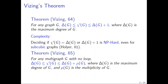Vizing also improved this result one year later: his theorem holds also for multigraphs. If you take a multigraph and color its edges with the constraint that adjacent edges get different colors, you just need to add mu of G — the multiplicity of the multigraph, which is the maximum number of edges between two vertices. So for a multigraph of multiplicity mu of G, you need at most delta G plus mu of G colors.